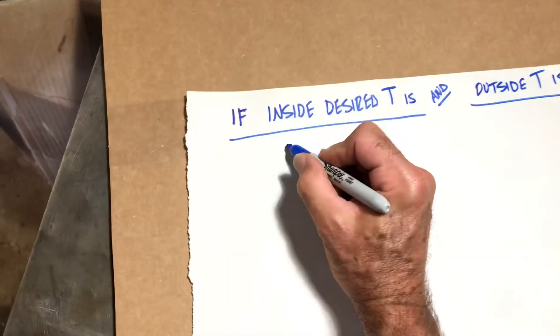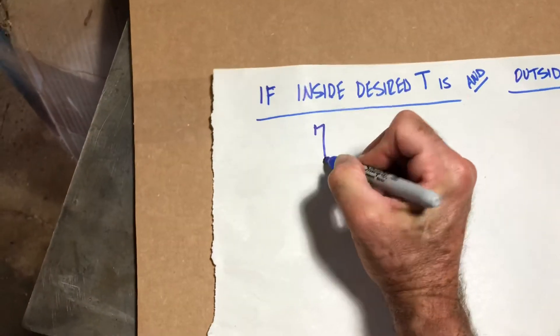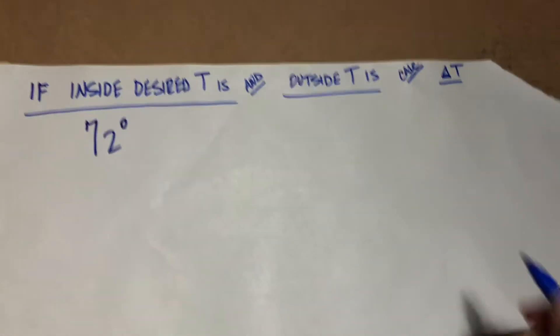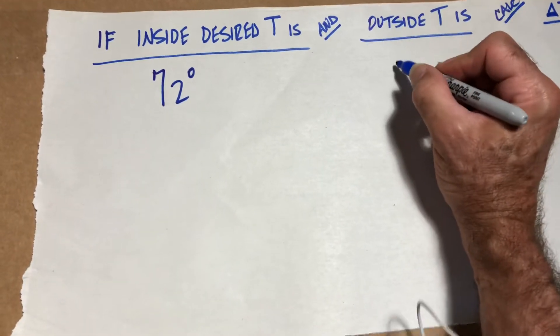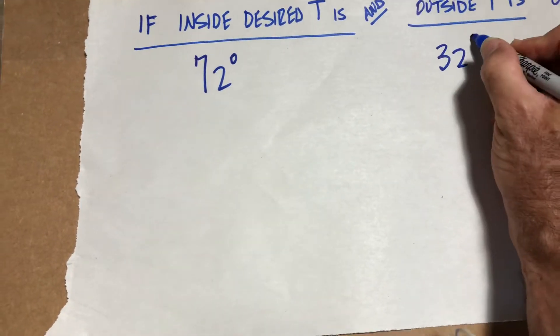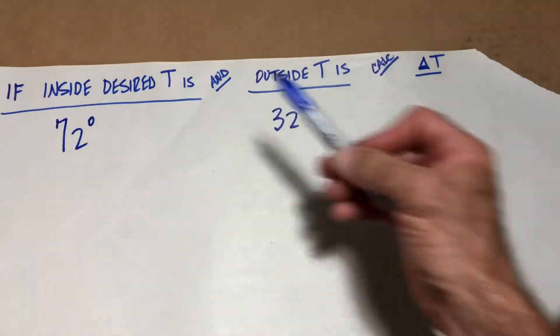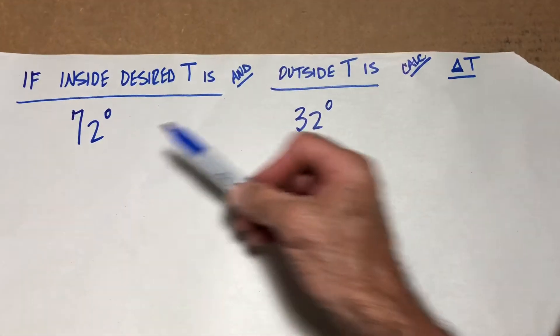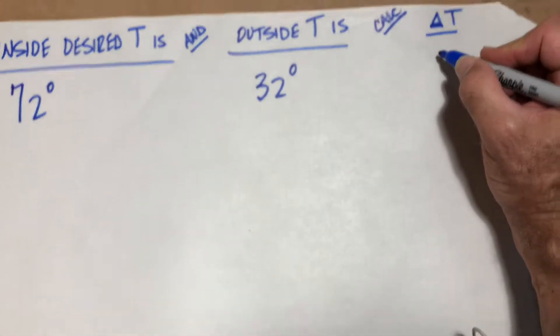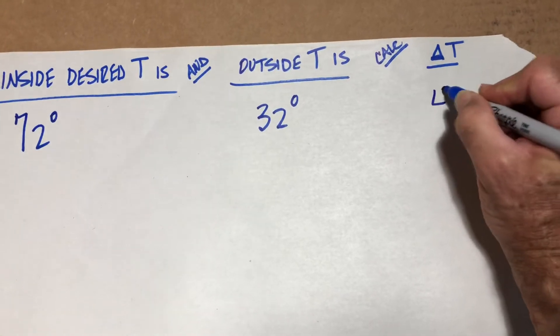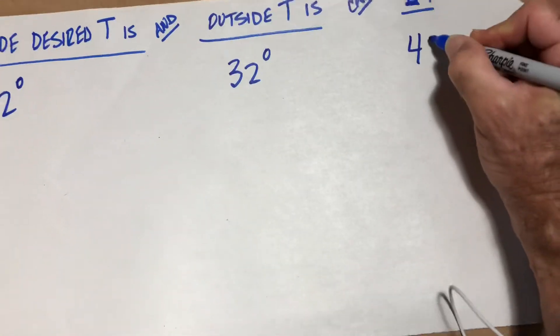So our desired indoor temperature is 72 degrees. Let's say it's 32 degrees outside. What is delta T? It's the difference between that and that, so it is 40 degrees.